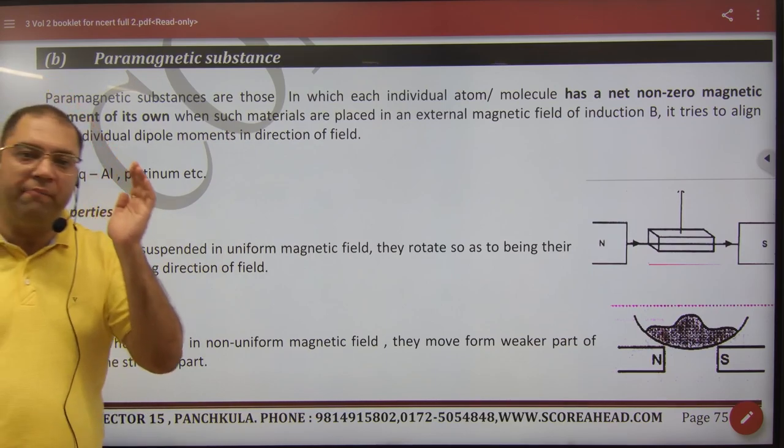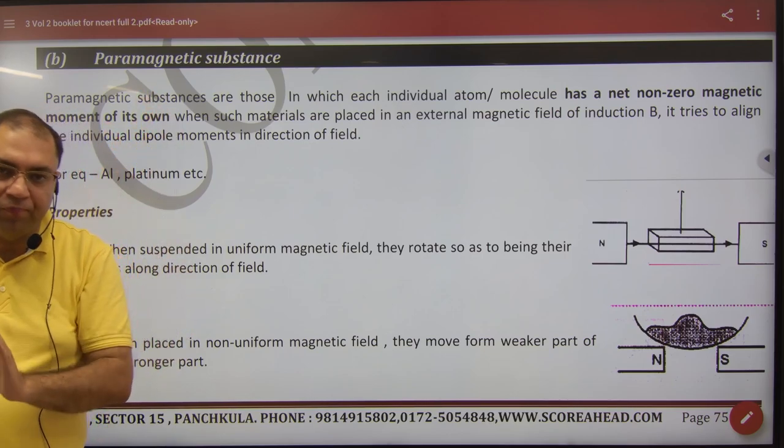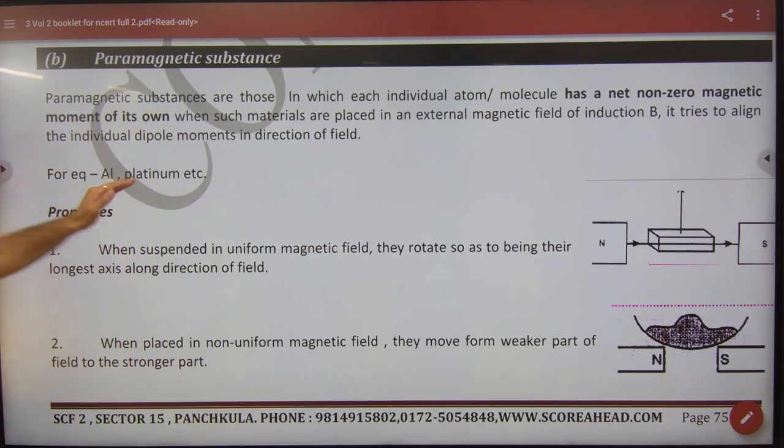Iron is para or ferro. An example is aluminum or platinum.